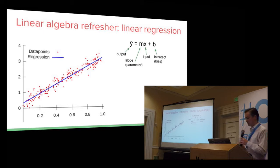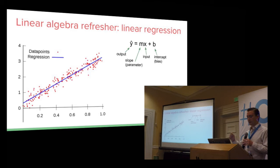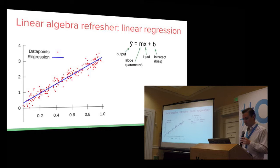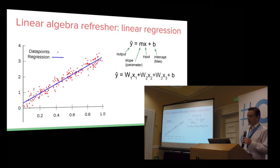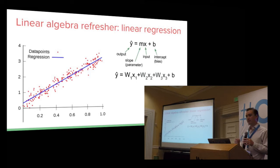Now let's do a simple linear algebra refresher. For a simple linear regression, you have a line that's fitted to some data points. You're trying to find the line that fits in this simple 2D case. The equation for the line is mx plus b, where m is your slope, x is your input feature, and b is your bias. Now if you have multi-dimensional space instead of just a single input x, you can have the slope represented as a weighted combination of your inputs.